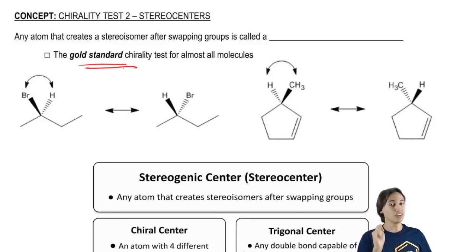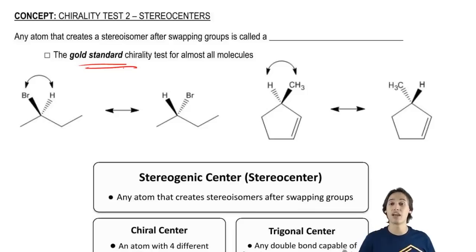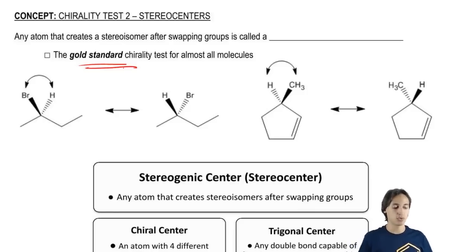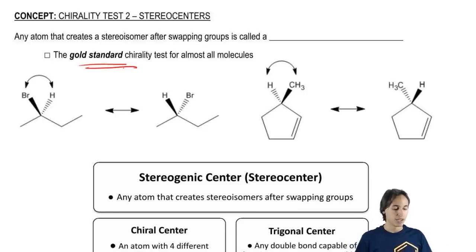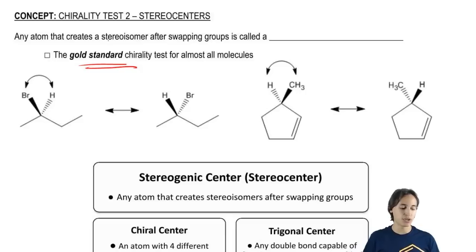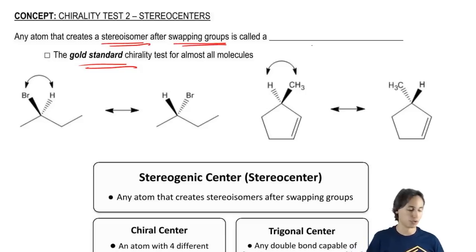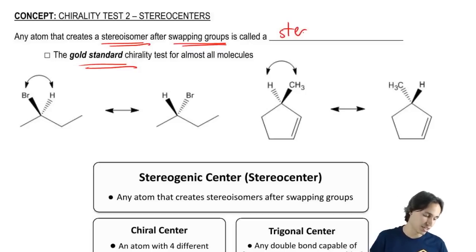It might be a little bit harder to use in some kinds of molecules, but it's going to work every time. So how does it work? We have to define what a stereocenter is. A stereocenter is any atom that creates a stereoisomer after swapping groups, and that is called a stereocenter.